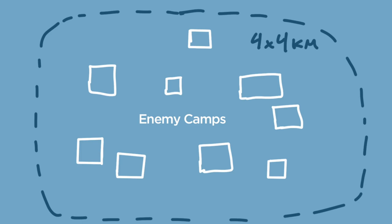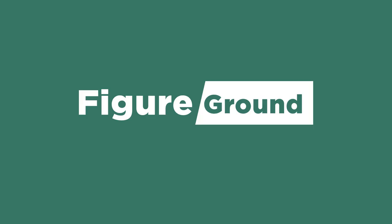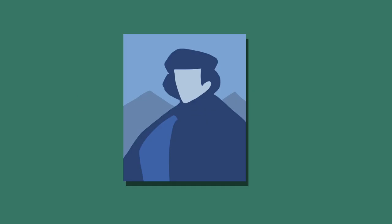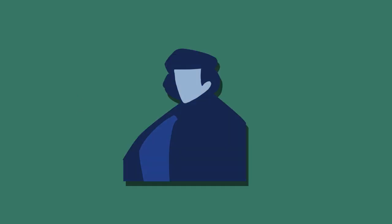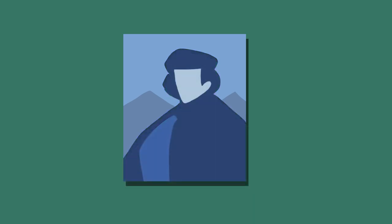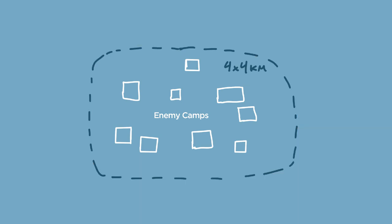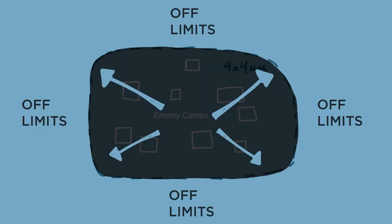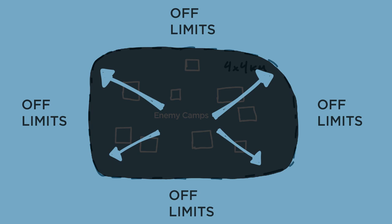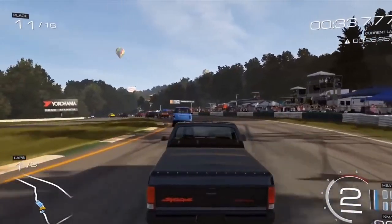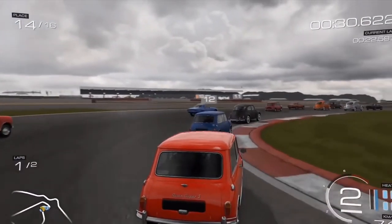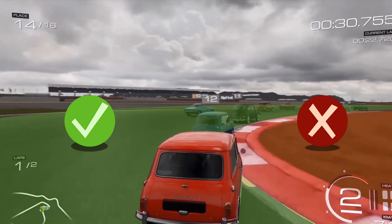This is a great opportunity to think about figure-ground relationships. For a painting, the figure might be the human and the ground is everything behind them. For us, we're thinking more about the distinction between the play area and the off-limits area. And there's all sorts of ways to accomplish this visually. There's no confusing the figure-ground relationship in a racing game — cars go here, and not here.